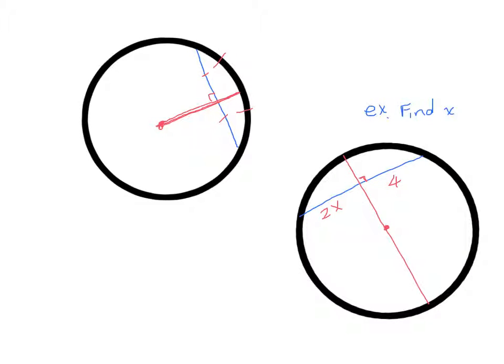Okay, so in our example here it does not say that this side is equal to this side, but what we do know is that we have a diameter and the diameter is perpendicular to our chord. So this is telling us, according to our theorem that we just learned, that this has to be equal to that even if it's not shown. So now we know that 2X is equal to 4, and therefore X is equal to 2. Alright, let's look at our third theorem.